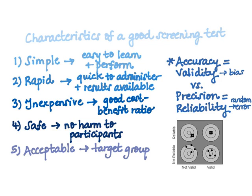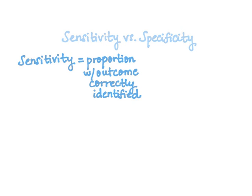In order to assess a good screening test, we have a few epidemiologic measures to go through. Starting with sensitivity versus specificity — these differ in that sensitivity defines the proportion of people with the outcome who were correctly identified, whereas specificity defines the proportion of people without the outcome who were correctly identified by the screening test.